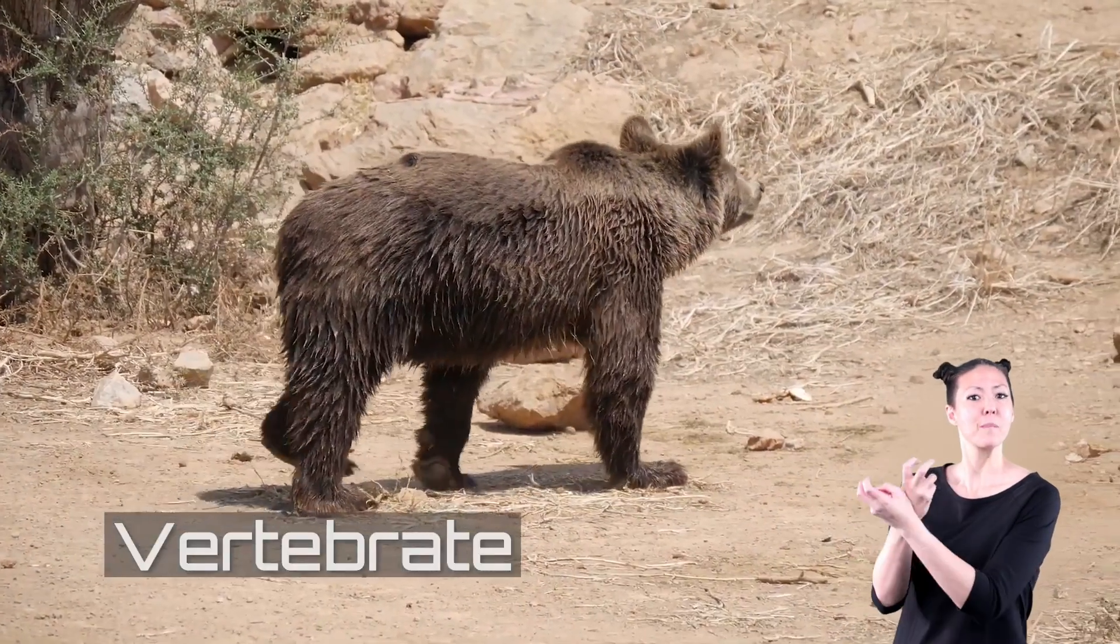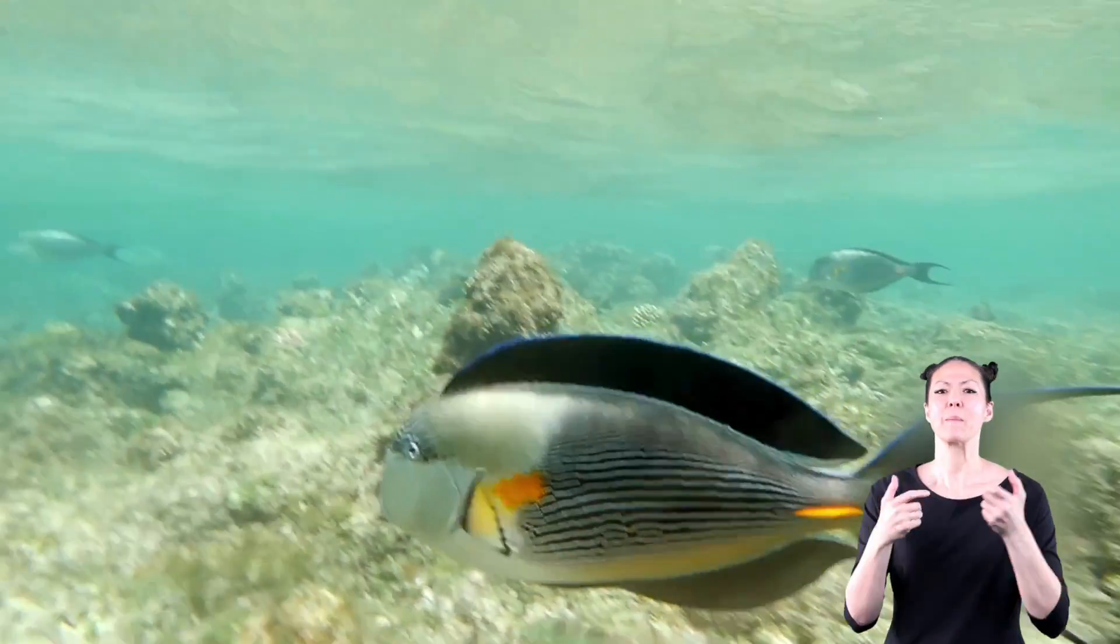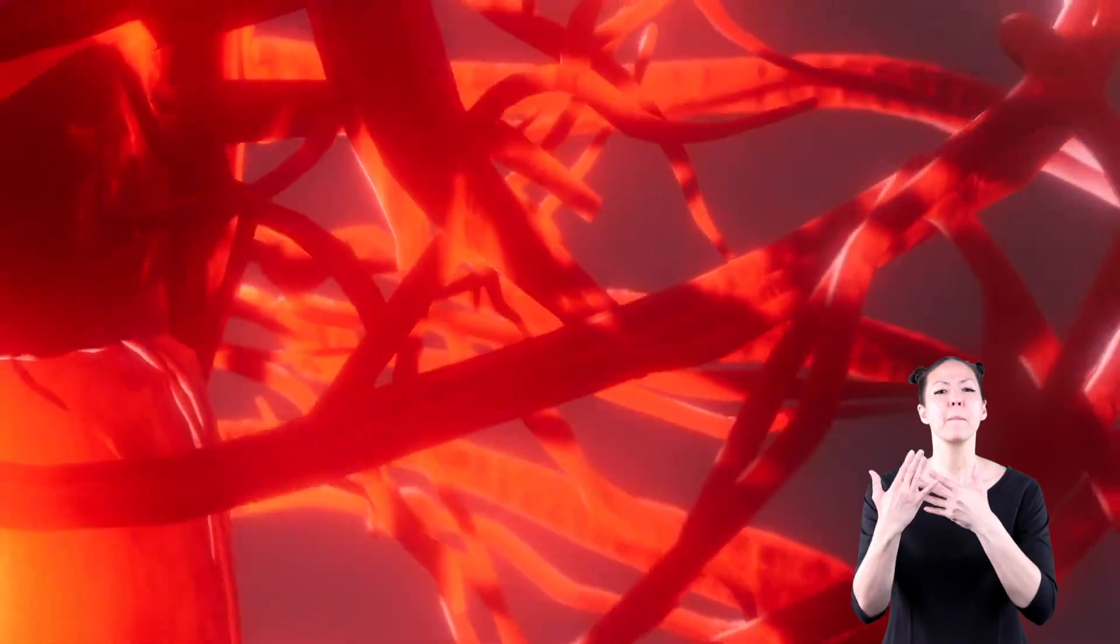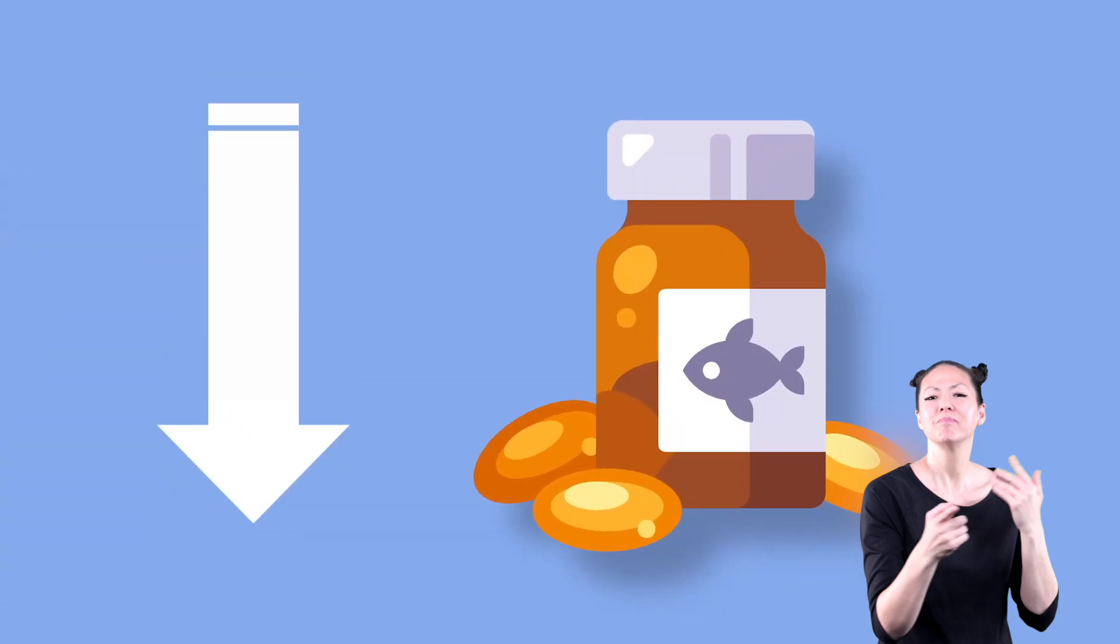Vertebrates, on the other hand, can either be warm-blooded like mammals or cold-blooded like fish. They have a very developed blood vascular system, but their ability to regenerate is usually poor.